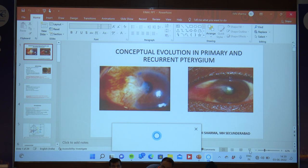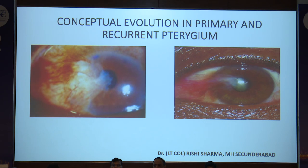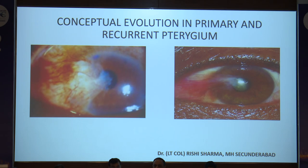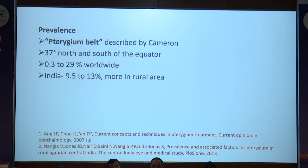We will be discussing the conceptual evolution in the primary and recurrent pterygium. A pterygium is a topic which has been discussed time immemorial. It is derived from the Greek word pterygios, which means wing, also known as surfer's eye, ophthalmoheliosis, a Cinderella ocular disease — a triangular wing-shaped degenerative fibrovascular proliferative tissue from the conjunctiva onto the cornea. It is most prevalent in the pterygium belt described by Cameroon, that is 37 degrees north and south of the equator. Worldwide prevalence is 0.3 to 29%, and in India 9.5 to 13%, more so in rural areas.